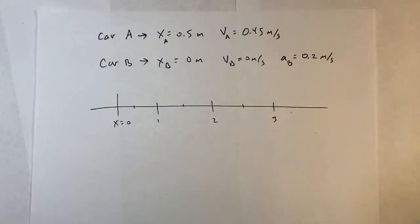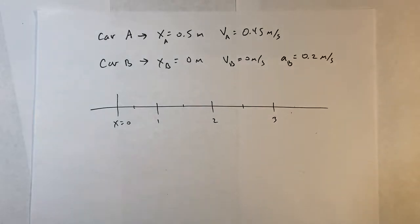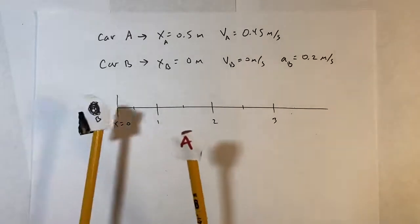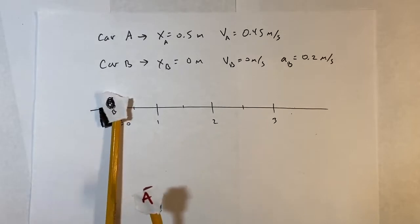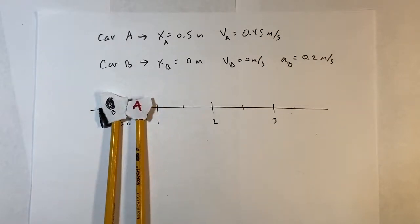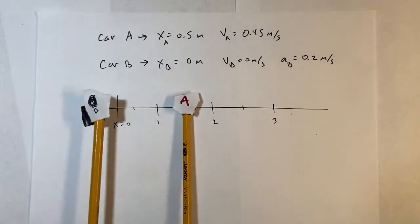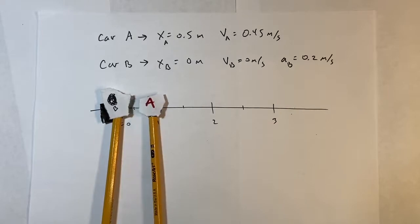We're going to continue with the physics problem — I call this the cop problem. Here's the word problem: car A starts at x equals 0.5 meters with a velocity of 4.45 meters per second. Car B starts at x equals zero with a velocity of zero but has an acceleration. So here's car B and here's car A — car A is moving at constant velocity and car B starts at rest.